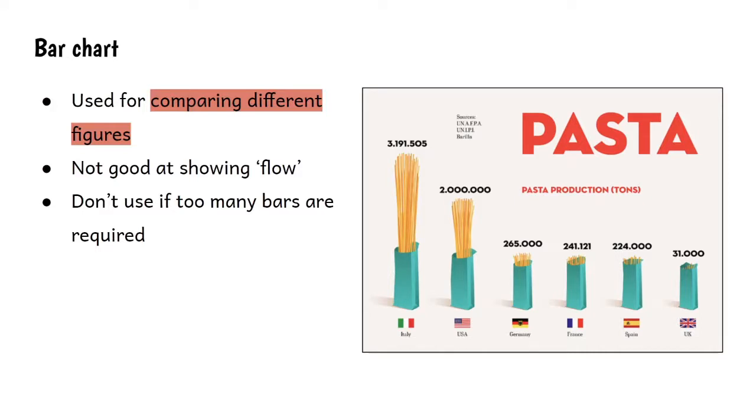The next one to look at is the bar chart. The bar chart's great if you want to compare different figures. The bar chart presents a snapshot of data at a certain time. It's not particularly good at showing flow - there are exceptions to that - but if you want to show numbers changing over time, the bar chart is maybe not the best one to use.